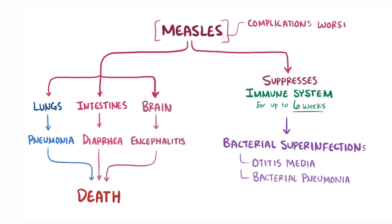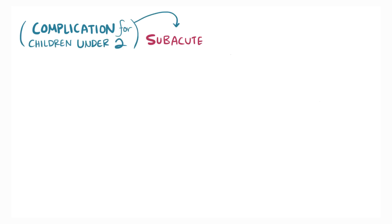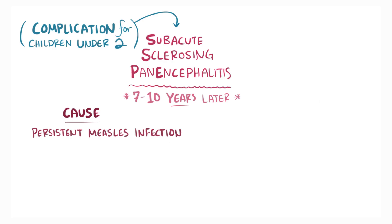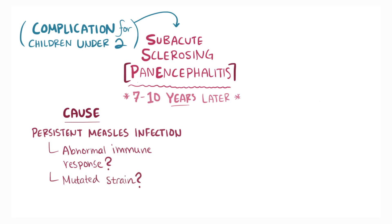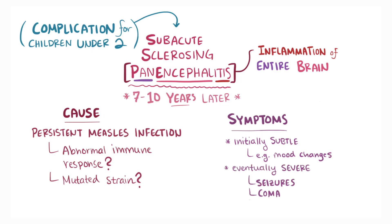All of these complications are worst among young infants, who typically have the highest rates of mortality during a measles outbreak. Another severe and often fatal complication for children under 2 years old is the development of subacute sclerosing panencephalitis, or SSPE, which can happen 7 to 10 years later. This is thought to be caused by persistent measles virus infection, possibly due to an abnormal immune response or a mutated strain of the measles virus, leading to chronic inflammation of the entire brain. The symptoms of SSPE are initially subtle, like mood changes, but eventually become severe and can include seizures, coma, and if left untreated, death.